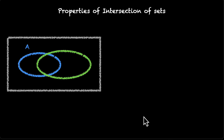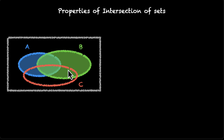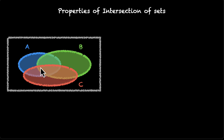If we have the universe and A, B, and C as three sets and we take intersection in some order — let's say we take A and B first — we find the intersection of A and B and get this region. Now we intersect this with the set C and get this middle region that's common in all three of them: A, B, and C. That's A intersection B intersection C.